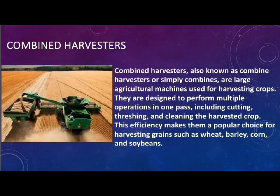Combined harvesters are versatile agricultural machines designed to efficiently harvest and process crops in a single operation. They integrate processes like cutting, streamlining the harvesting of grains such as wheat, barley, and corn.